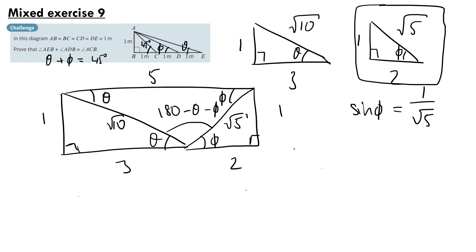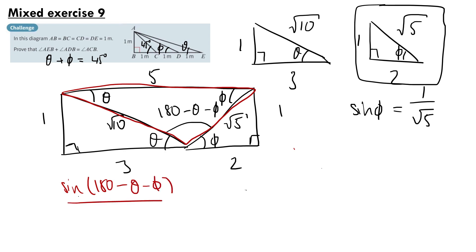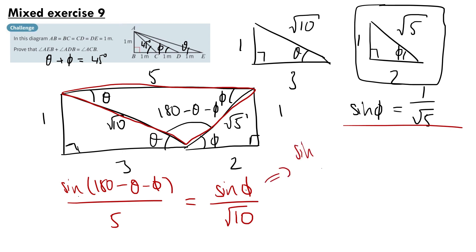Now on this triangle in red we can use the sine rule to get: sine of (180 minus theta minus phi) over the opposite side, which is 5, equals sine of phi over the opposite side, which is root 10. Using our value of sine of phi and multiplying both sides by 5, we get sine of (180 minus theta minus phi) equals 5 times 1 over root 5, all over root 10. Simplifying this down we get 1 over root 2.